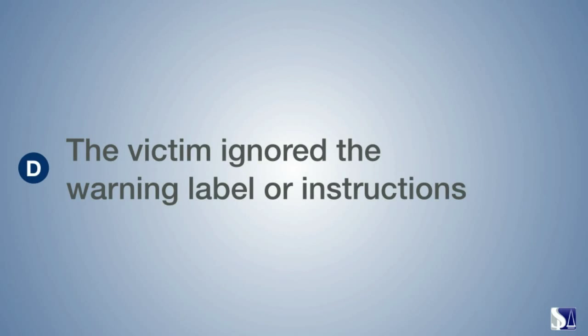If a manufacturer can prove any of the above circumstances, strict liability will not be automatic. Instead, the burden of proof will shift back to the victim, who then has to disprove the manufacturer's defenses.